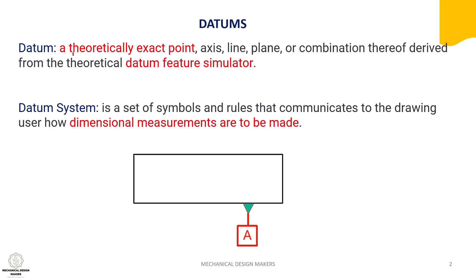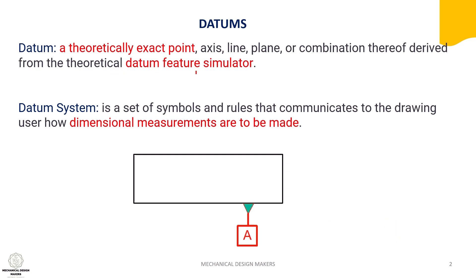Datum is a theoretically exact point, axis, line, plane, or combination of these, which is derived from a theoretical datum feature simulator. Here you can see two terms: datum and datum feature simulator. The datum is derived from the datum feature simulator. I will make a separate video for the datum feature simulator.